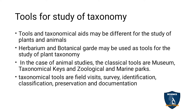In plant taxonomy, tools include the herbarium and botanical gardens. In zoology, we deal with the museum, taxonomical keys, zoological parks, and marine parks. Printed materials can also be accessed through websites. Taxonomical tools also include field trips, where you study classification, preservation, and documentation.